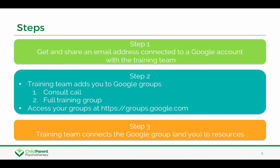The steps to do this are: first, we need you to get and share an email address connected to a Google account with the training team. The training team will then add you to some Google Groups — typically two of them: one for your consult call and one for the full training group. In the future, if you want to access your Google Groups, you can go to groups.google.com. The training team will then connect the Google Group to the resources.